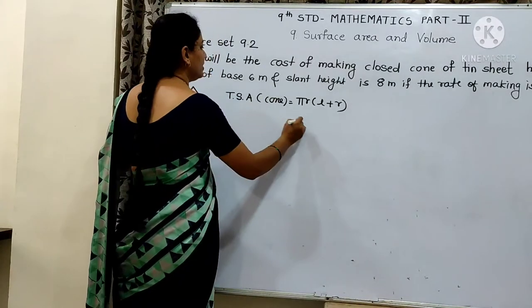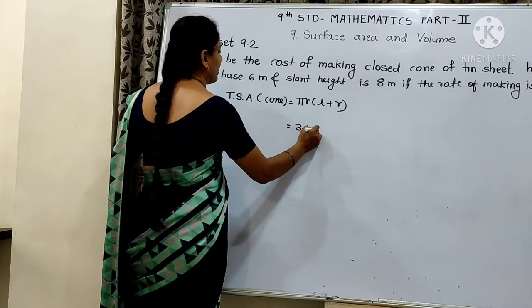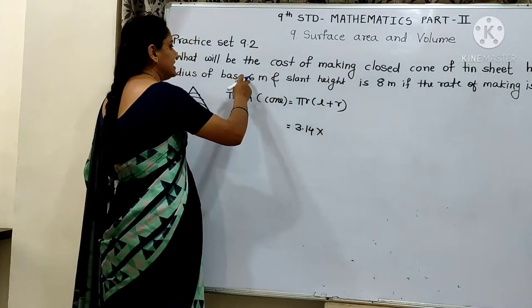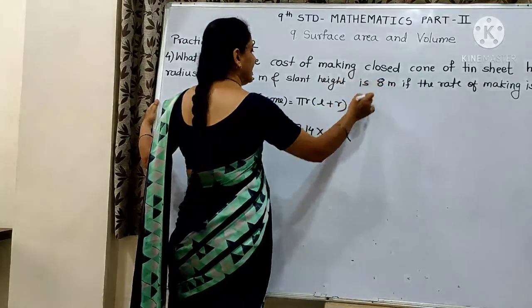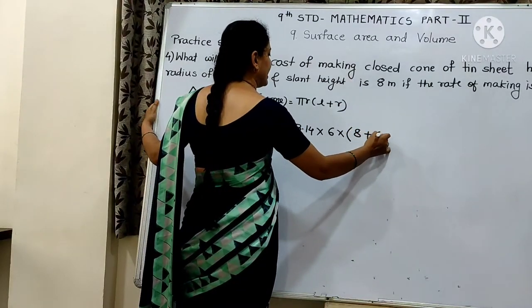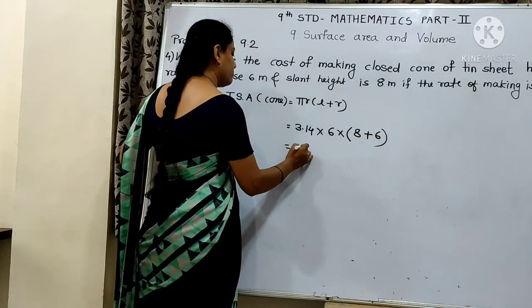Radius is 6 meter. And length, sorry, slant height is 8 meter. And radius is 6 meter. 3.14.